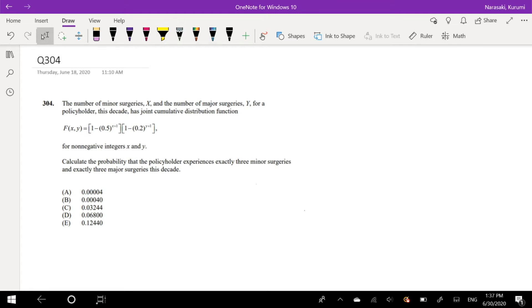The number of minor surgeries x and the number of major surgeries y for a policyholder this decade has a joint cumulative distribution function f(x,y) = (1 - 0.6^(x+1))(1 - 0.8^(y+1)) for non-negative integers x and y. Calculate the probability that a policyholder experiences exactly 3 minor surgeries and exactly 3 major surgeries.